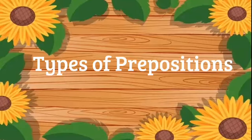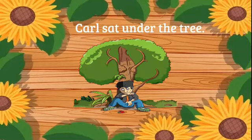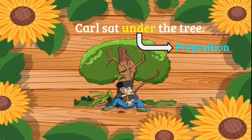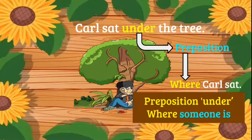Now let's look at the types of prepositions. Type 1: Preposition of place. A preposition of place shows where someone or something is. Looking back at our sentence, Carl sat under the tree — under, which is our preposition, tells us where Carl sat. The preposition under tells us where someone is.